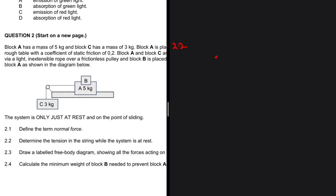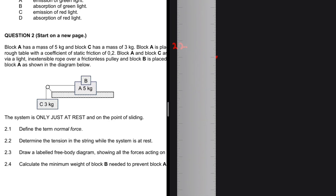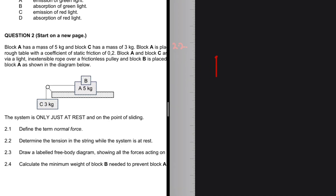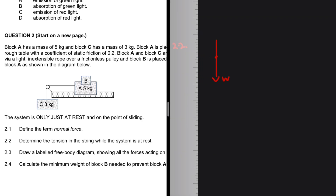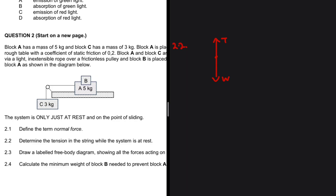First, let's draw a free body diagram of block C to understand the situation. Block C has weight acting downward — weight is always present. Since it's hanging on a string, we also have tension acting upward. These are the only two forces on block C, and since the system is only just at rest and on the point of sliding, these two forces are equal to each other. So the tension equals the weight.